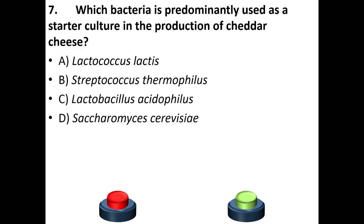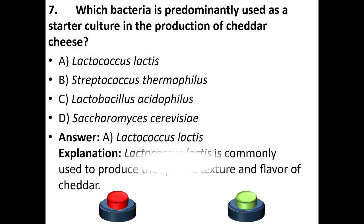Seventh question: Which bacteria is predominantly used as a starter culture in the production of cheddar cheese? Option A: Lactococcus lactis. Option B: Streptococcus thermophilus. Option C: Lactobacillus acidophilus. Option D: Saccharomyces cerevisiae. The answer is A — Lactococcus lactis. Lactococcus lactis is commonly used to produce the specific texture and flavor of cheddar.